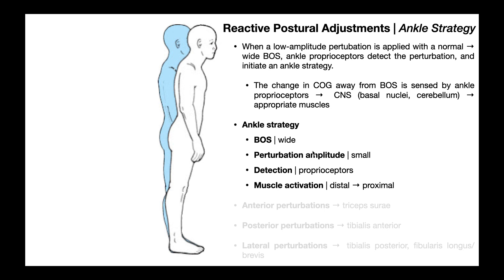Also, the amplitude of the perturbation needs to be small. If the perturbation is too strong or too large, you're going to elicit what's called a step strategy. Additionally, with the ankle strategy, the detection of that shift in the center of gravity is through proprioceptors in the ankle joint.